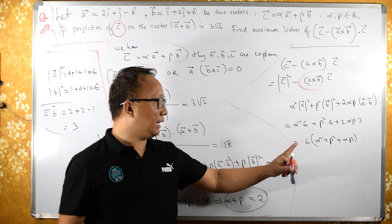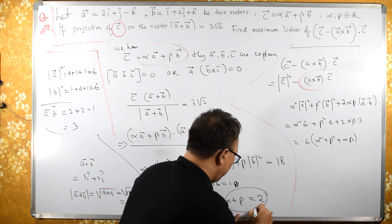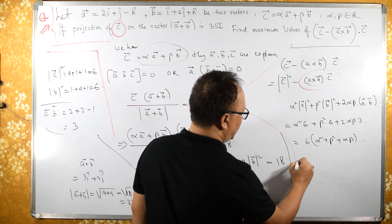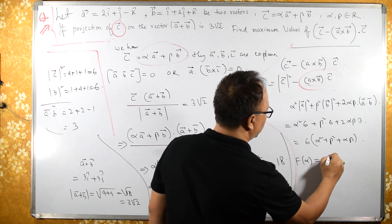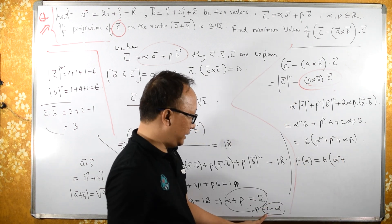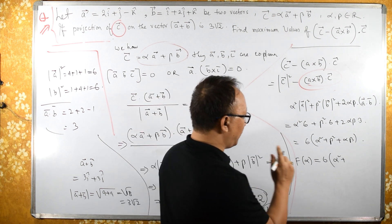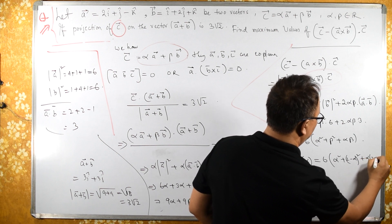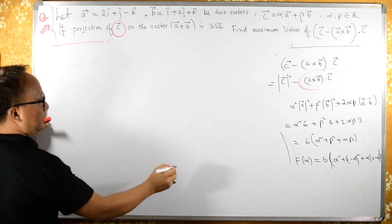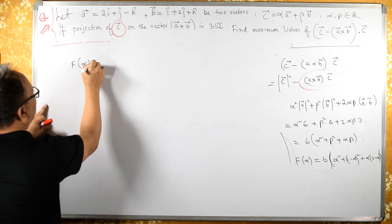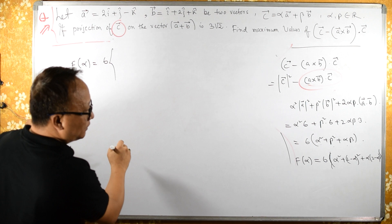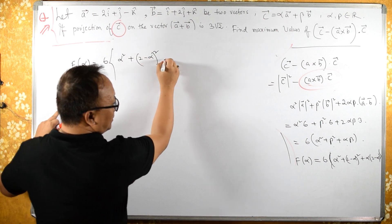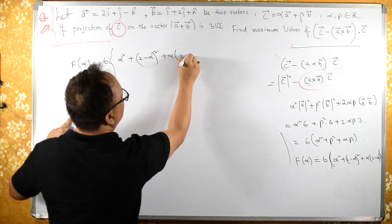Let us convert this into a single variable. From α + β = 2, we get β = 2 − α. So f(α) = 6[α² + (2 − α)² + α(2 − α)].